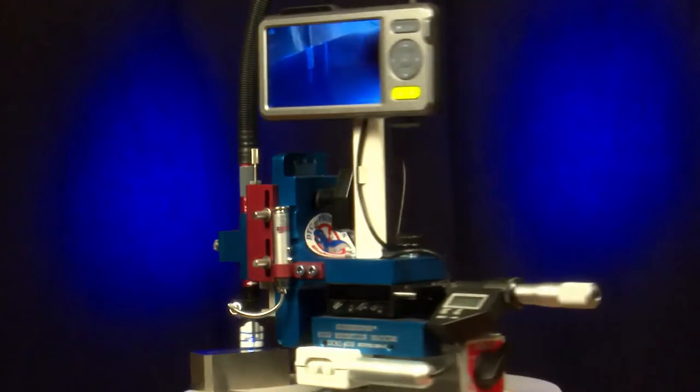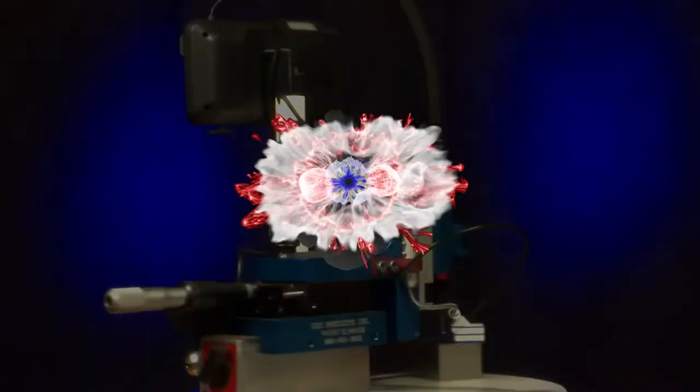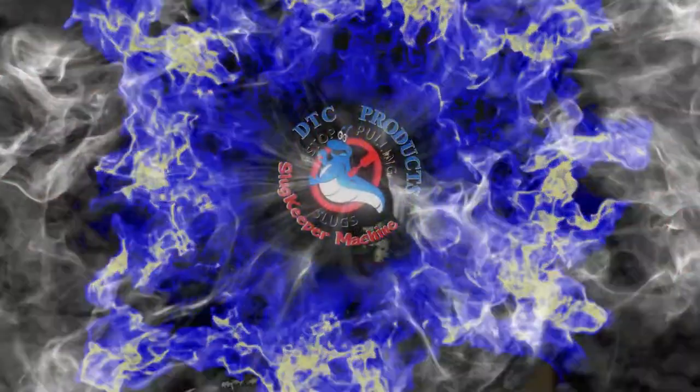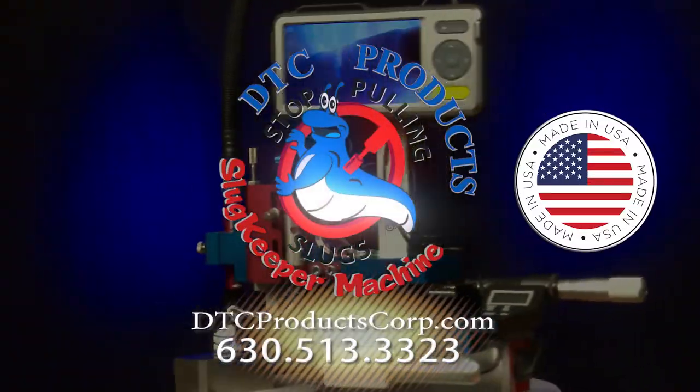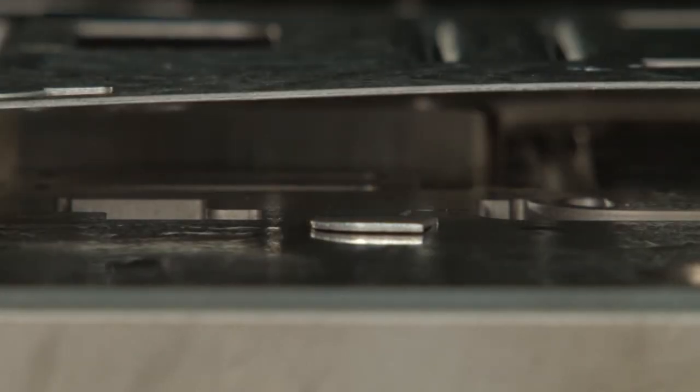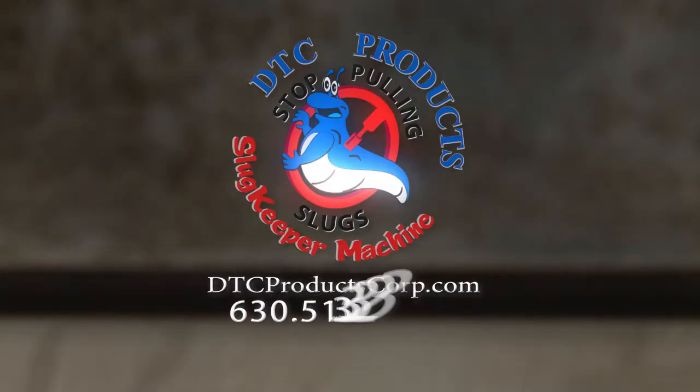Put an end to the costly delays, lost productivity and rejected parts. Call DTC Products today and learn how you can order your own slug retention machine. Like slugs in the garden, slugs in the stamping process are part of the landscape. Keep them under your control with the slug keeper.